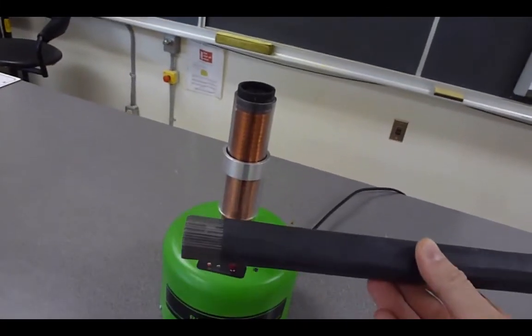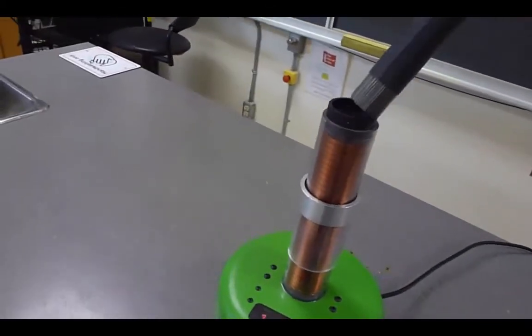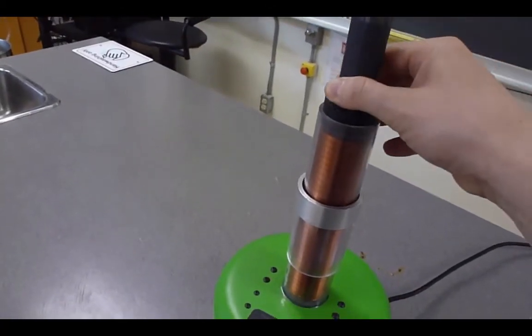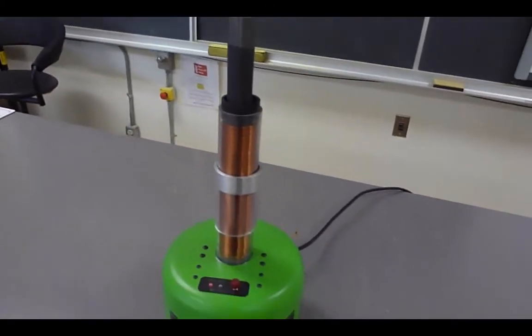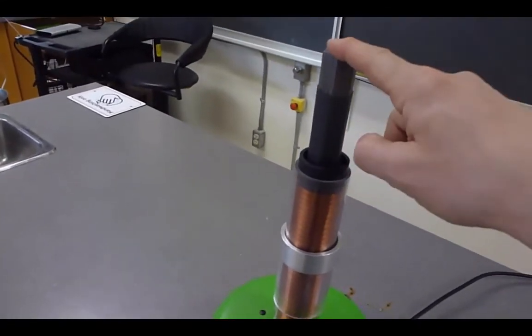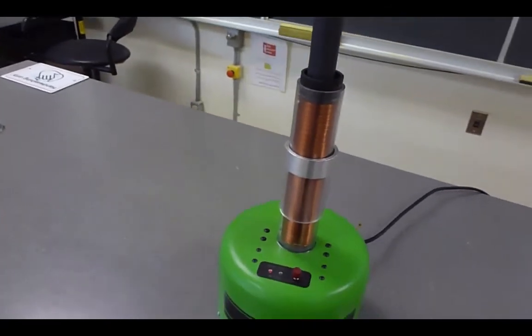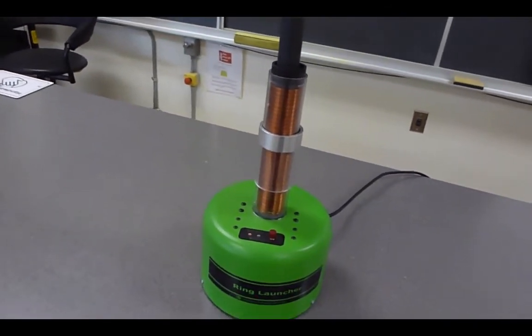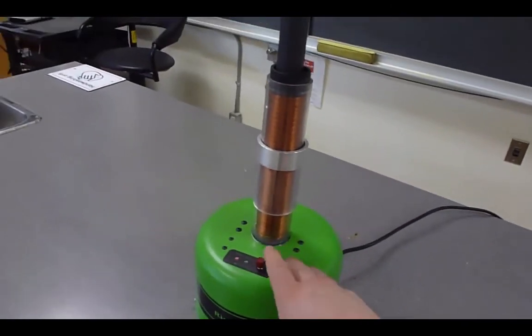If you were to add a ferromagnetic core to the solenoid, you take the magnetic field that was there and essentially amplify it or magnify it. By putting this iron core in here, we've essentially made the magnetic field close to a thousand times stronger, which means we should really see something happen now.